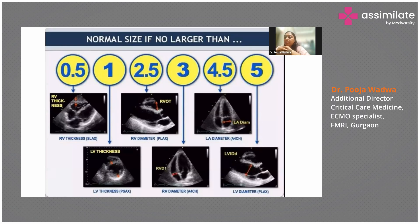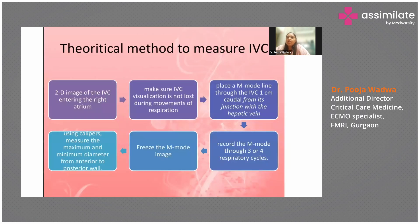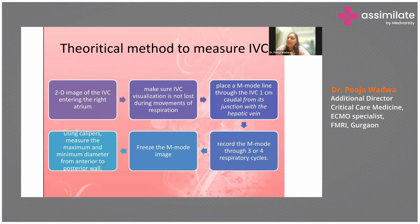How do you assess the volume status, IVC, and its preload responsiveness? You initially have to rely on a 2D image of the IVC entering the right atrium — focus there. Make sure that it is the IVC; you should see it even when your patient is breathing, that means during the movements of respiration. When you have a good view, only then place it on the M-mode through the IVC.